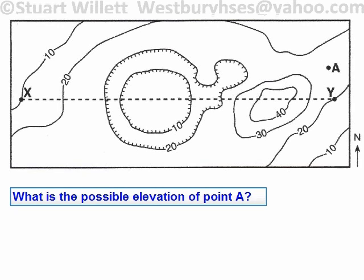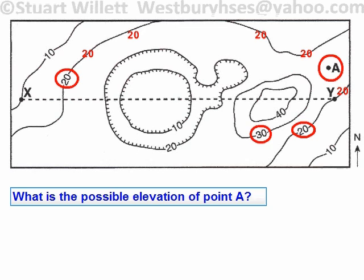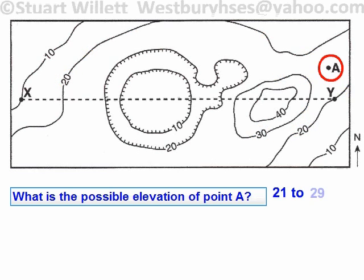What is the possible elevation of point A? Now A is up here on the right — I've just highlighted it. It's between contour lines 20 and 30. It's between two lines of 20 and also a line of 30. So A could be any number between 20 and 30. It cannot equal 20 or else it would be on one of the lines, and it cannot equal 30. But it could be 21 through 29.